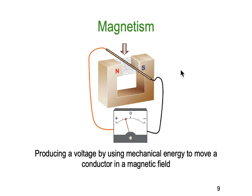Magnetism — this is the biggie of course. As we move our conductor through our magnetic field, a potential is induced and we're going to get a current flow through our conductor. The mechanical energy through the field is converted into electrical energy or electrical current. And if you move the conductor in the opposite direction, you'll get current flowing in the opposite direction — in the negative.